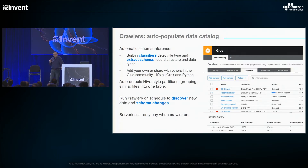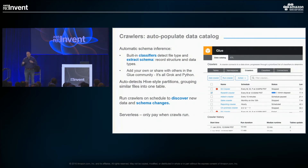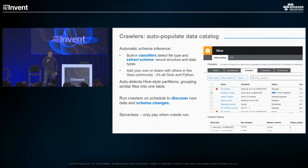More interestingly, beyond our built-in classifiers, you can add your own and share them with others in the Glue community. It's all Grok or Python running underneath the covers. Sharing is an incredibly important part of the Glue experience, because you don't want to be request 473 in my backlog. That's one of those things that forces you into hand-coding — if the tool doesn't do it, what are you going to do except build it yourself? And even if it's missing 5%, you end up having to do 100%. You're much better off if you can just code that 5% and introduce it into the system.